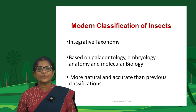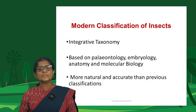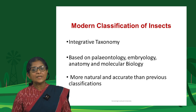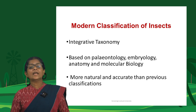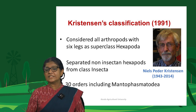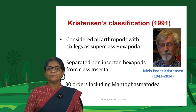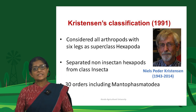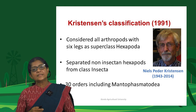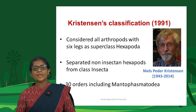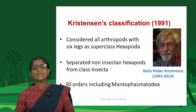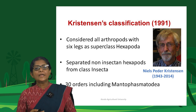Modern classification of insects is based on integrative taxonomy, incorporating several disciplines like paleontology, embryology, anatomy, and molecular biology, making it more natural and accurate than previous classifications. The most important modern system is Christensen's classification. Christensen considered all arthropods with six legs as superclass Hexapoda, separating three non-insectan hexapods from class Insecta. His classification originally included 29 orders, and later Mantophasmatodea was added, making it 30 insect orders.